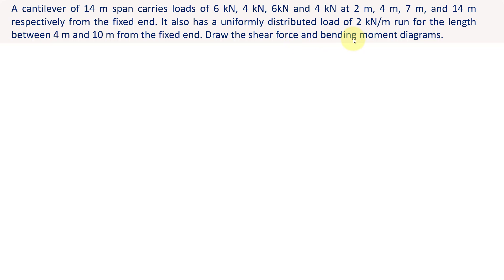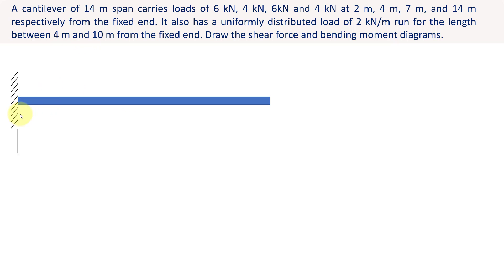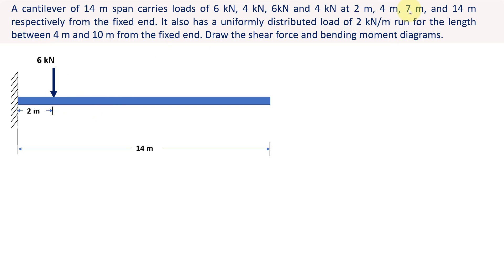Draw the shear force and bending moment diagrams. First, let us construct the configuration diagram of the given cantilever beam. The cantilever beam measures a length of 14 meters. It carries a load of 6 kN at a distance of 2 meter from the fixed end. The next point load, 4 kN, is located at a distance of 4 meter from the fixed end.